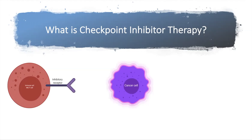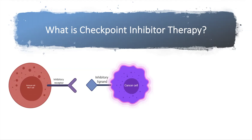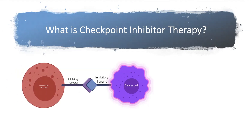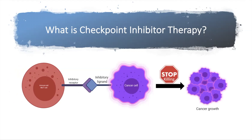On the other hand, cancer cells express ligands called inhibitory ligands. So when the inhibitory receptor binds to the inhibitory ligand, the immune cell will have less power to kill the cancer cell. The cancer cell escapes, and this leads to cancer growth.